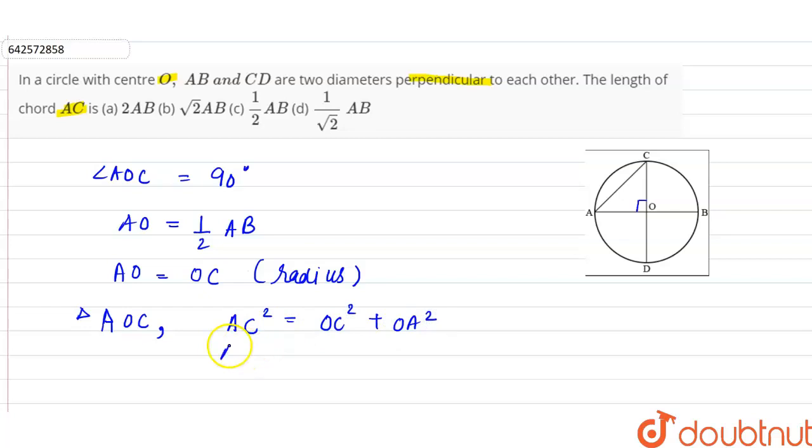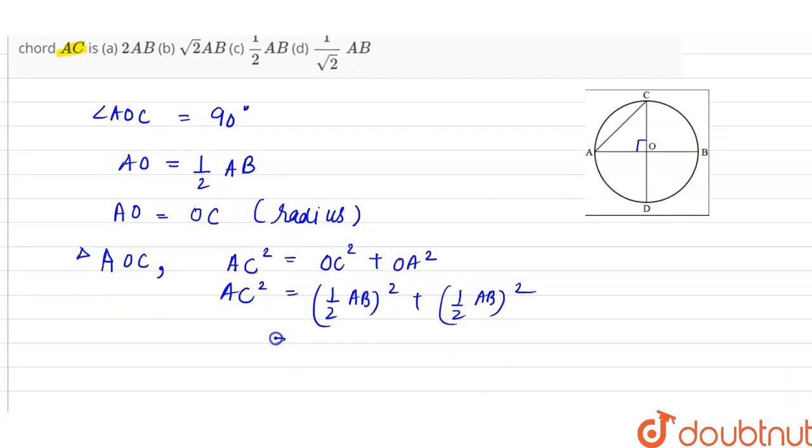So AC² will be equal to OC and OA, both are equal to half of AB. So (½AB)² plus (½AB)². This is equal to, we can say that AC² is equal to ¼AB²...